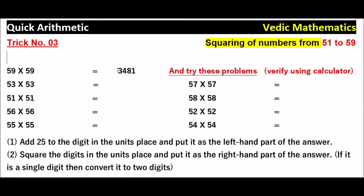So 59 into 59 is 3481. Coming to 53 into 53, first add 25 to 3. 25 plus 3 is 28. And 3 into 3 is 9.